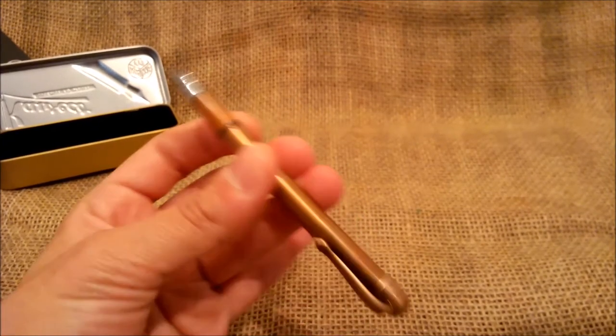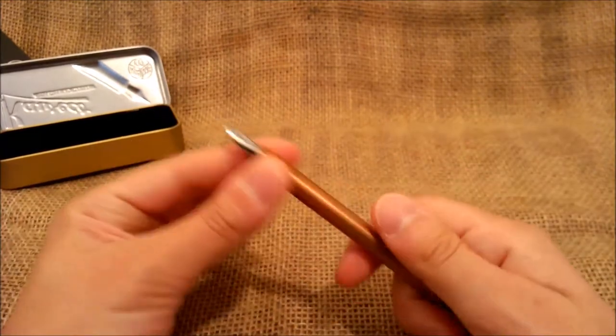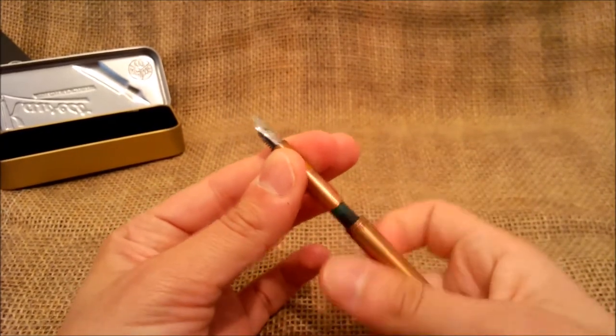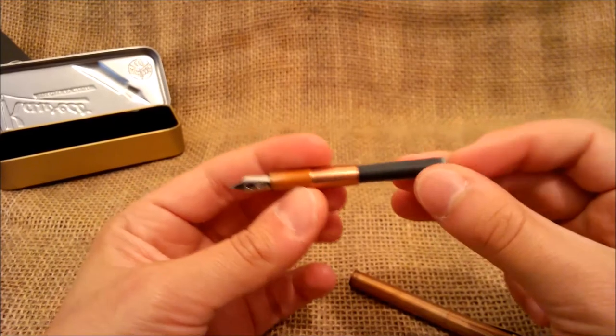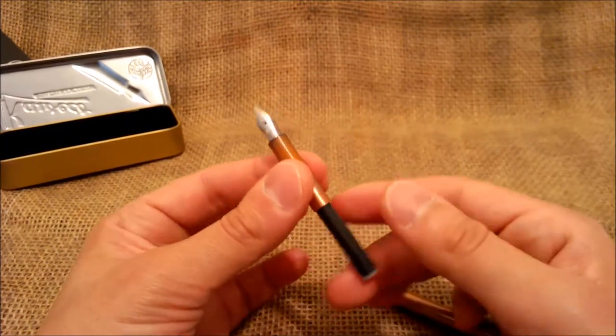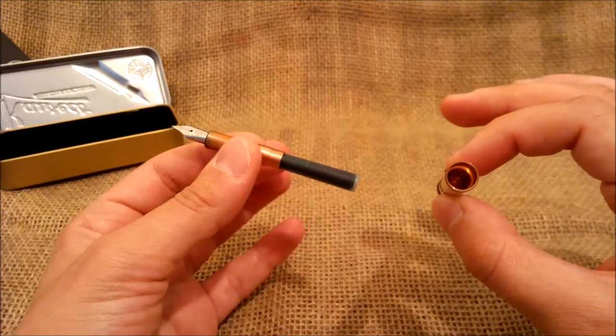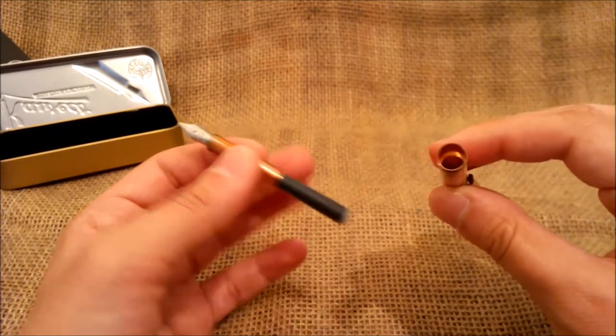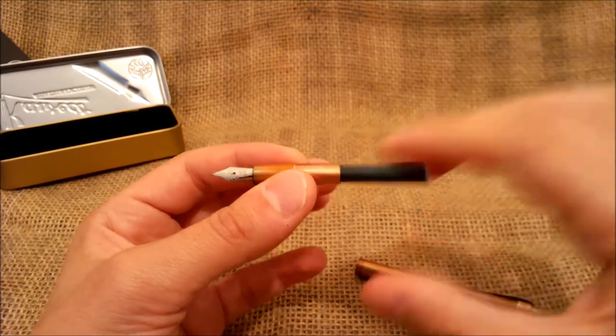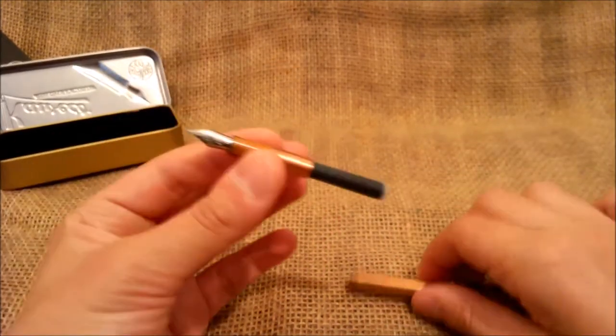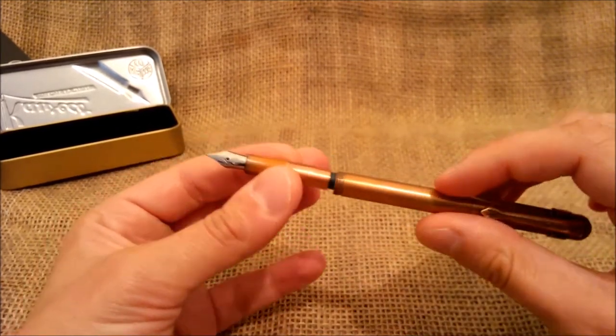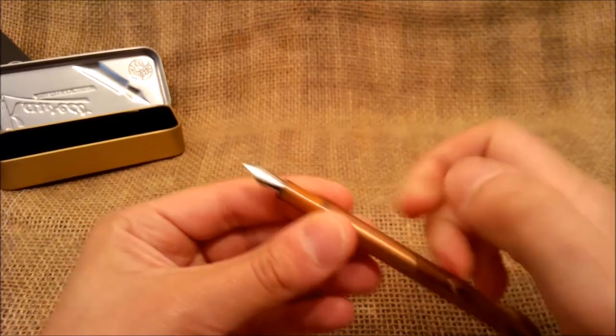Because this is made of copper, this is almost indestructible. It's nice to take anywhere. The filling system takes a short international cartridge. It can take the small rubber pump Caveco converter, but it has a very small capacity. So, it's easier to fill this one with a syringe. The piston converter won't fit inside the barrel.